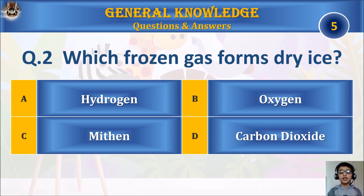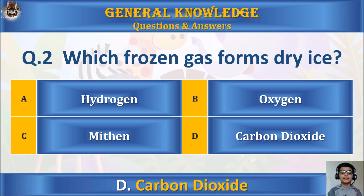Question 2: Which frozen gas forms dry ice? A) Hydrogen, B) Oxygen, C) Methane, or D) Carbon dioxide? Your time starts. The answer is D) Carbon dioxide.